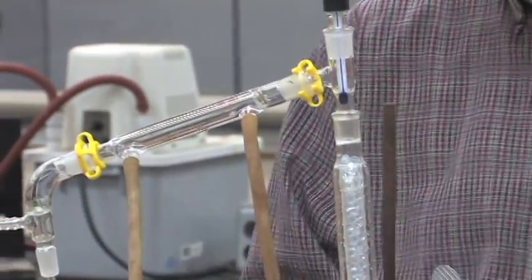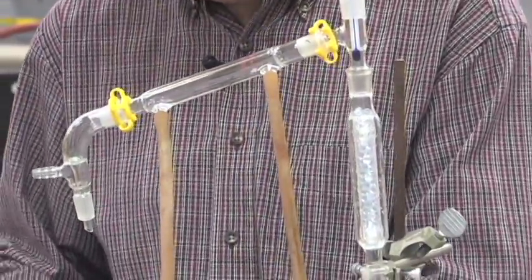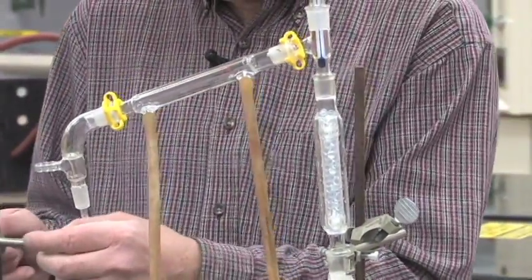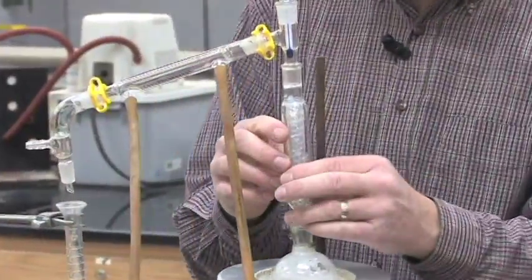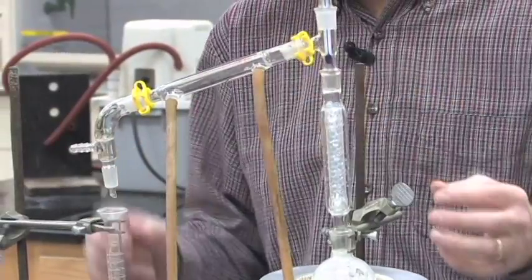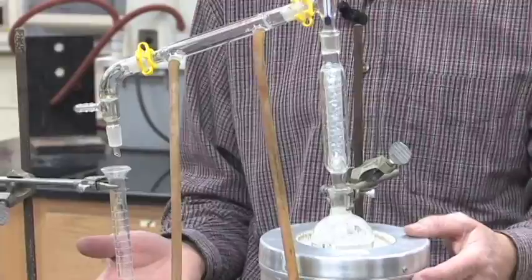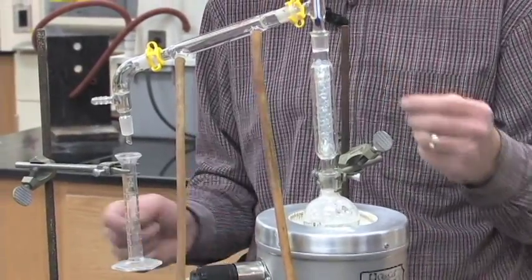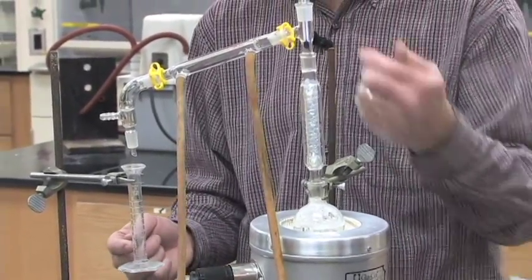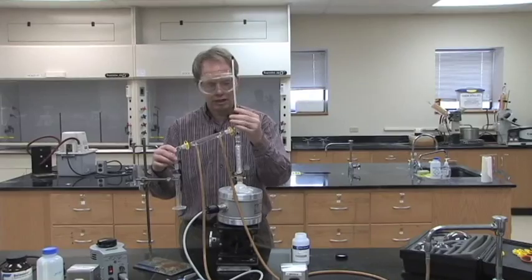As our stuff distills, we'll collect it into a graduated cylinder. You all have a graduated cylinder in your drawer. What you'll do is every milliliter that comes across, record the temperature on the thermometer.